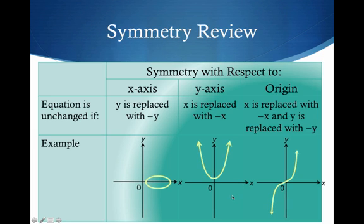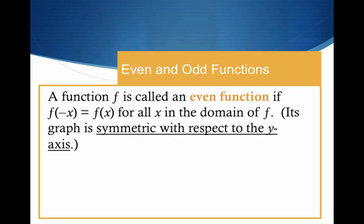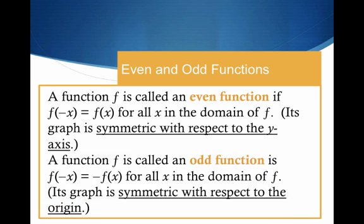I've included this slide as a review so you can see x-axis symmetry, y-axis symmetry, and origin symmetry. Now let's talk about even and odd functions. A function f is called an even function if, when I plug in negative x, I get my original function — this is just y-axis symmetry. An odd function means if I plug in negative x, I get a negative version of my function — this is origin symmetry. How are you going to remember that? O, odd, O, origin.